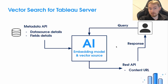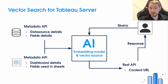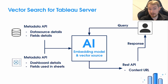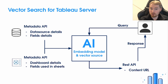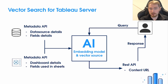This is what we've been able to do with data sources, but you could extend this to include dashboards as well. In a similar manner, you'd find the details of the dashboards, find the sheets that make up each individual view, and then find the fields in those sheets to describe what is being shown — passing all that on to the embedding model as part of your search output.